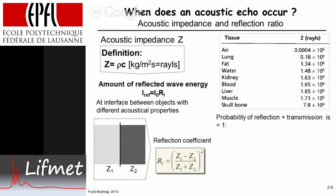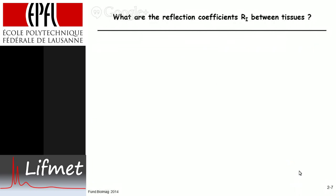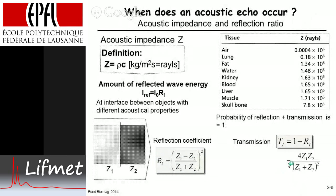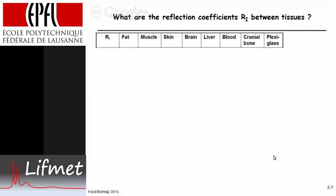That's the reflection coefficient — it tells us what percentage of the acoustic wave is reflected. Neglecting all other effects, the probability of reflection and transmission is one, so you can calculate the transmission coefficient, which is just one minus R, the reflection coefficient. If one does that and does the math, one obtains the transmission coefficient expression here.